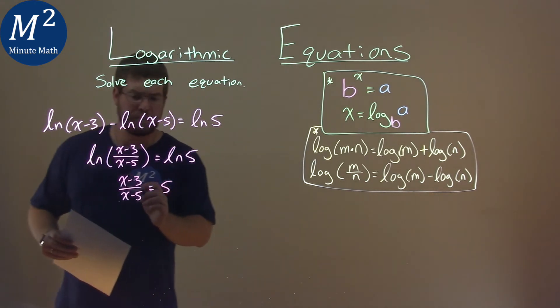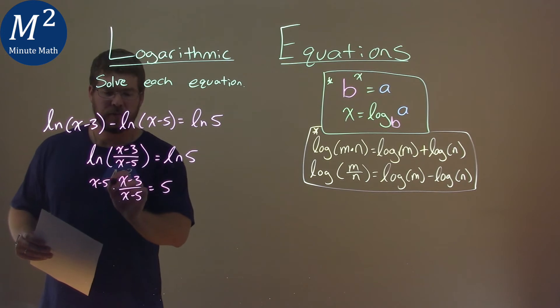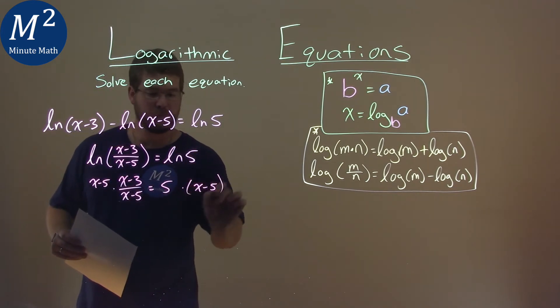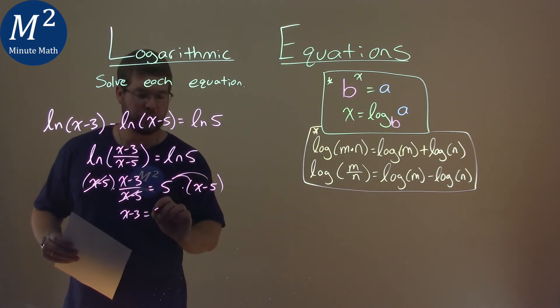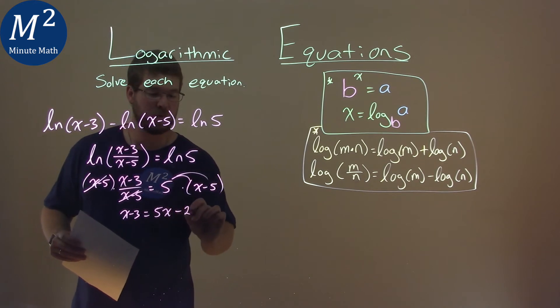Not too bad. I'm going to multiply x minus 5 to both sides, like so. This cancels. And we have x minus 3 equals, distribute that, 5x minus 25.